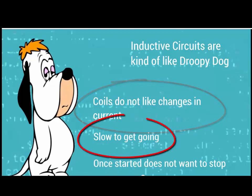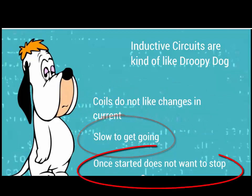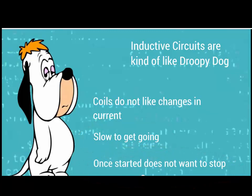So Droopy Dog does not like changes in current — slow to get going, and once current is flowing, there is resistance to stopping the current. And that's what a coil does when you put it in a circuit: it becomes an inductive circuit.